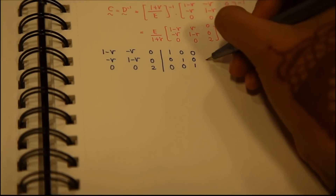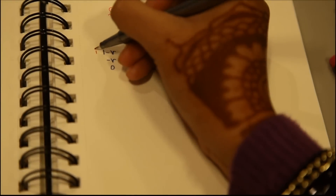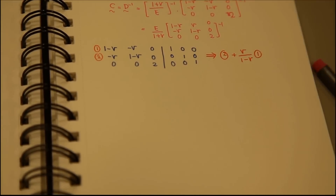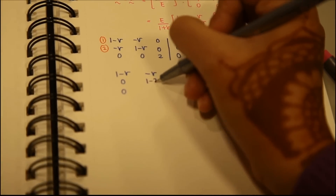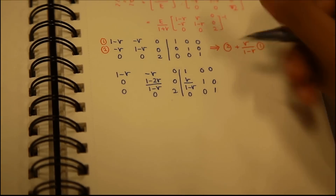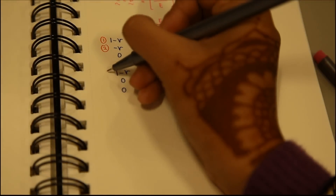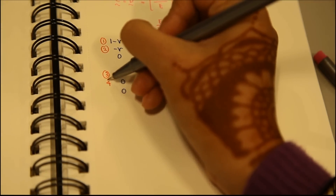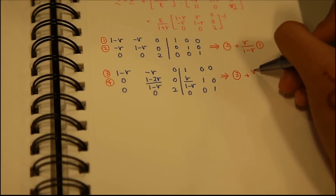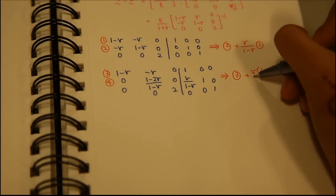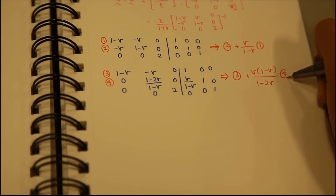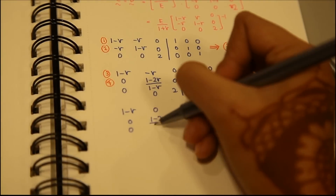For the first step, we multiply the first row by mu divided by (1 minus mu) and add it to the second row, giving a new, simpler second row. The second step adds the first row to the new second row multiplied by mu times (1 minus mu) divided by (1 minus 2 mu). This gives us two new first and second rows.